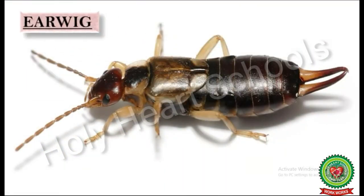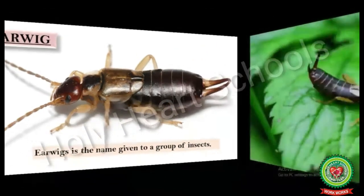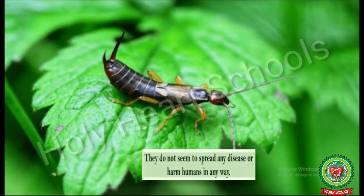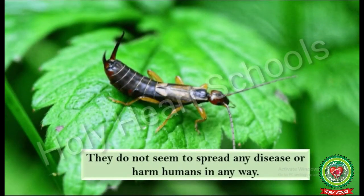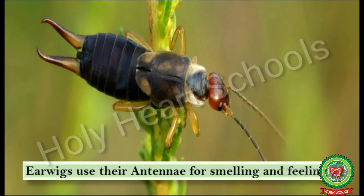Number three is earwig. Earwig is the name given to a group of insects. They do not seem to spread any disease or harm humans in any way. They use their antennae for smelling and feeling. Their antennae are attached to their head.